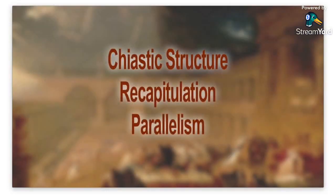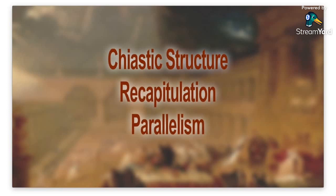Chiastic structure, recapitulation, and parallelism are names for a device in Hebrew poetry. Basically, this is repetition. In order for people to remember things in ancient times when things were told orally or were supposed to be memorized, they would often use repetition. There are thousands of examples in Scripture of parallelisms, chiasms, and so on. To really understand Daniel, sometimes the second verse is saying the same thing as the first verse, just in different language. So if you want to understand what the language is saying in one place, you can look at where it's repeated — otherwise you're interpreting things differently than the author intended.